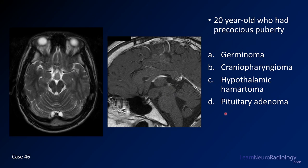Case number 46 is a 20-year-old with precocious puberty. We have a T2 and a post-contrast — the post-contrast has enhancement of the nasal mucosa and a little enhancement of the vessels. Your choices are germinoma, craniopharyngioma, hypothalamic hamartoma, or pituitary adenoma.